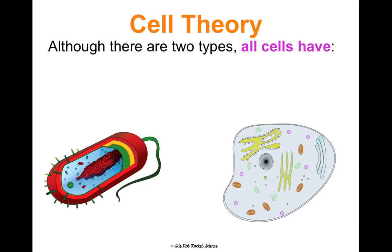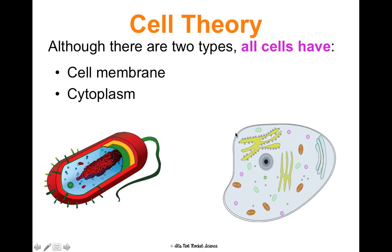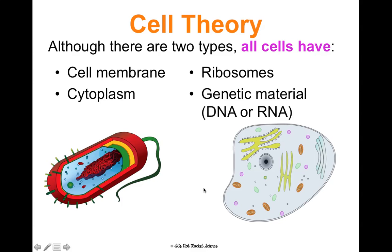All cells, whether prokaryotic or eukaryotic, have four things in common: a cell membrane, which is like the skin surrounding the cell; cytoplasm, which is the fluid inside the cell; ribosomes, which are little dots that make proteins; and genetic material in the form of DNA or RNA, which we'll learn more about in the future.